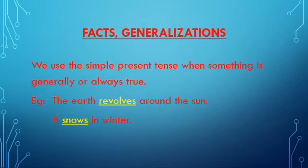For facts and generalizations, we use the simple present tense when something is generally or always true. For example: the earth revolves round the sun — here the verb is 'revolves' and it is in simple present tense. It snows in winter — here the verb is 'snows' and it is in simple present tense.